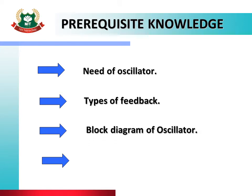The next prerequisite is the block diagram of oscillator — also covered in previous lectures. An oscillator block diagram consists of a single-stage CE amplifier and a feedback network. Classification of oscillators is also important to know before studying today's topic; there are different types of oscillator circuits, and today we are studying the crystal oscillator from that classification.